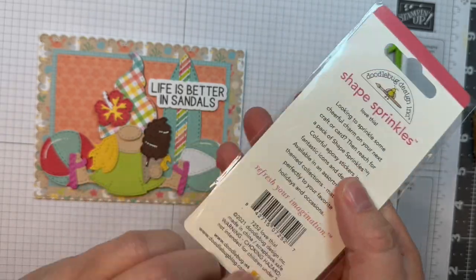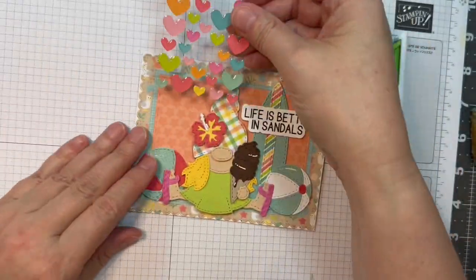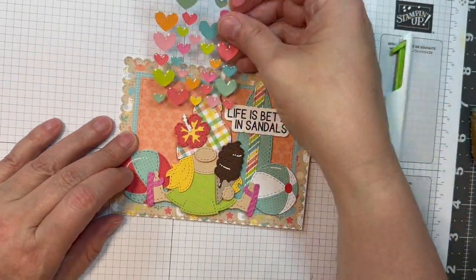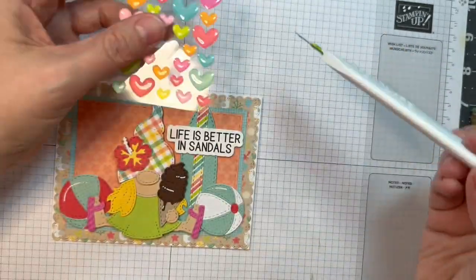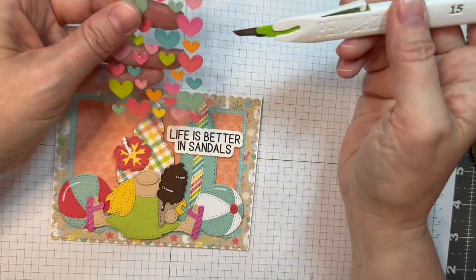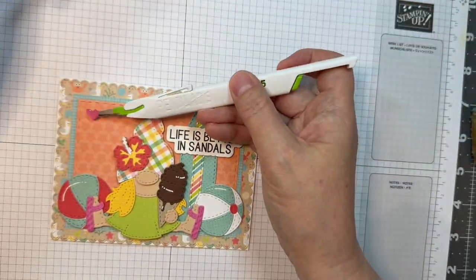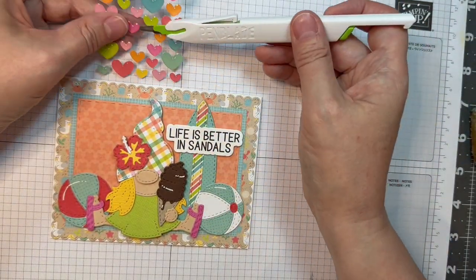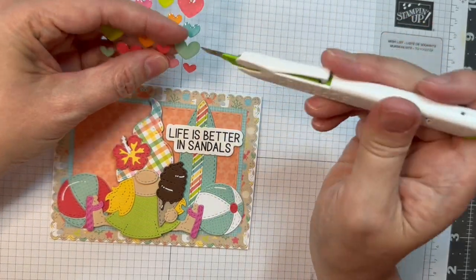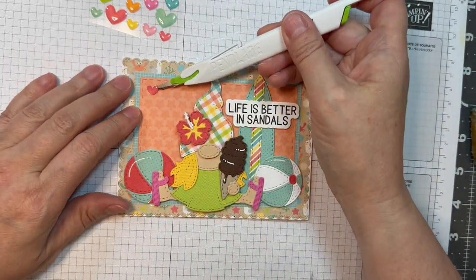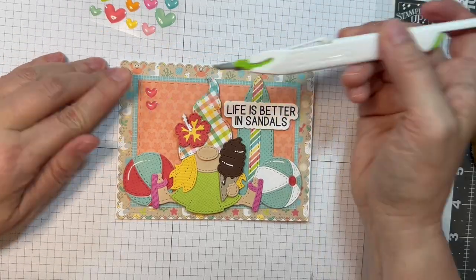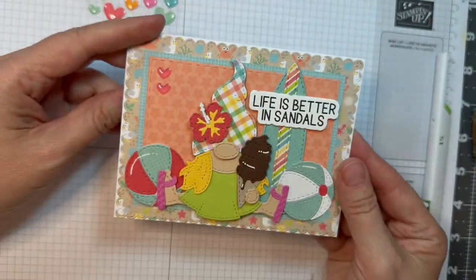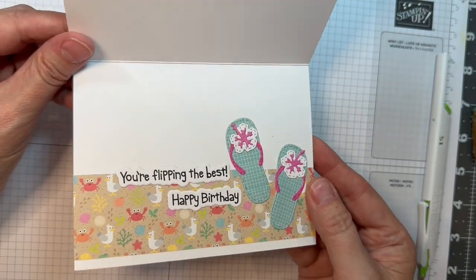Now I'm using shape sprinkles from Doodlebug, these are called Love This. I'm just going to use two little hearts from this set. I'm going to use the little hearts that are more reddish in tone because that peach on the background is kind of nice but was throwing me off. I'm going to add two little hearts to the upper left hand corner just for a little something, and then there is my card.